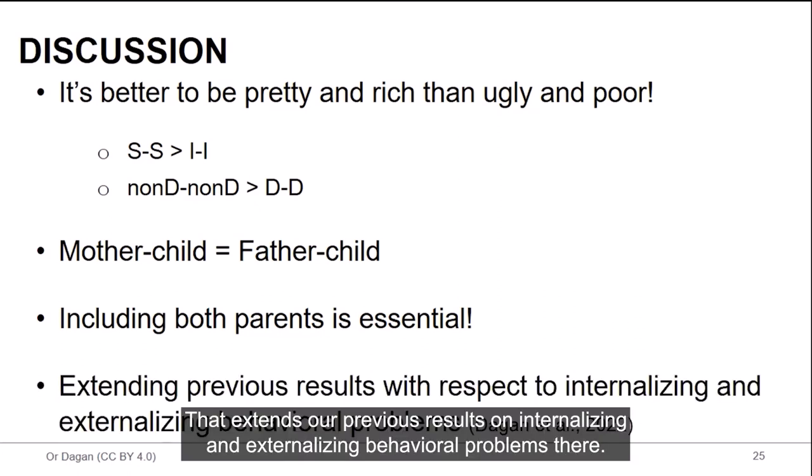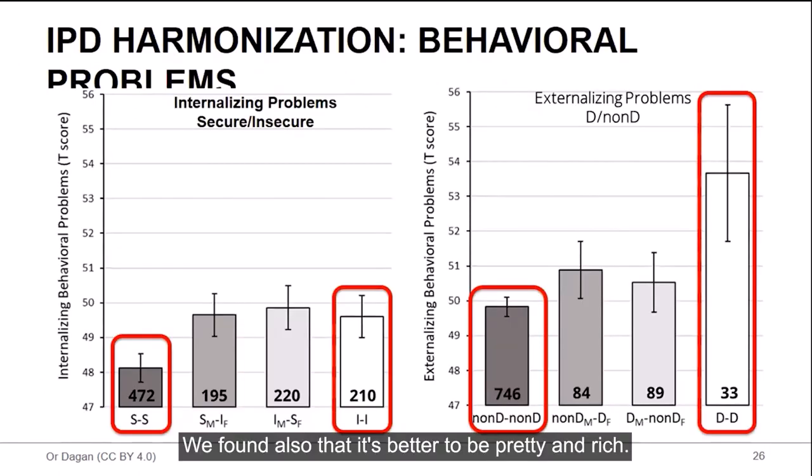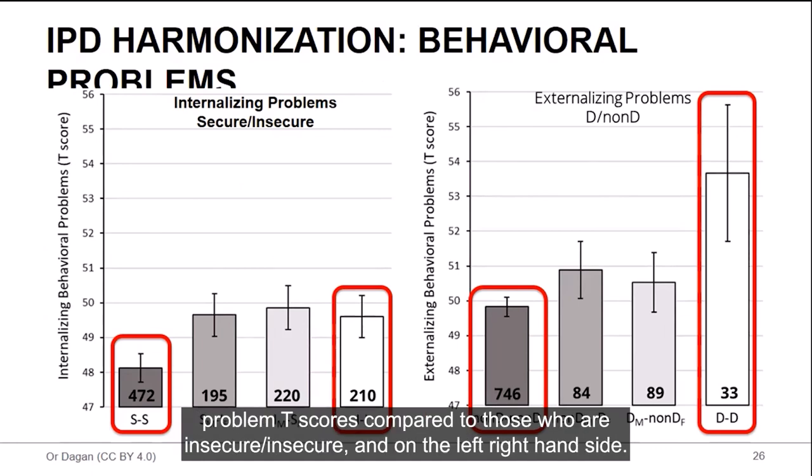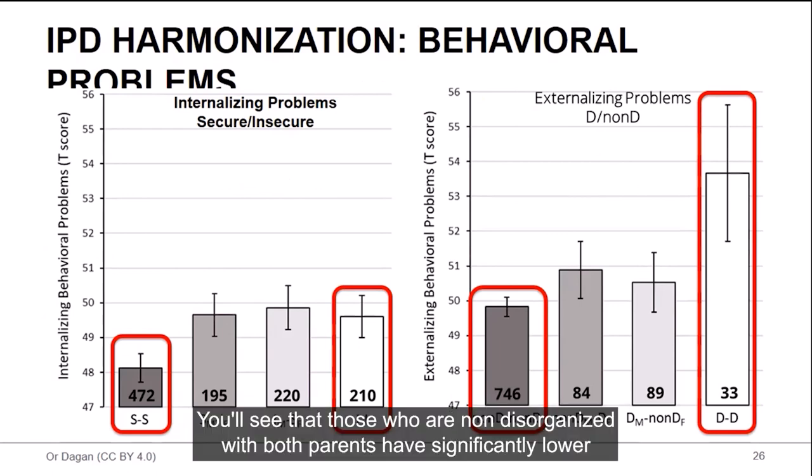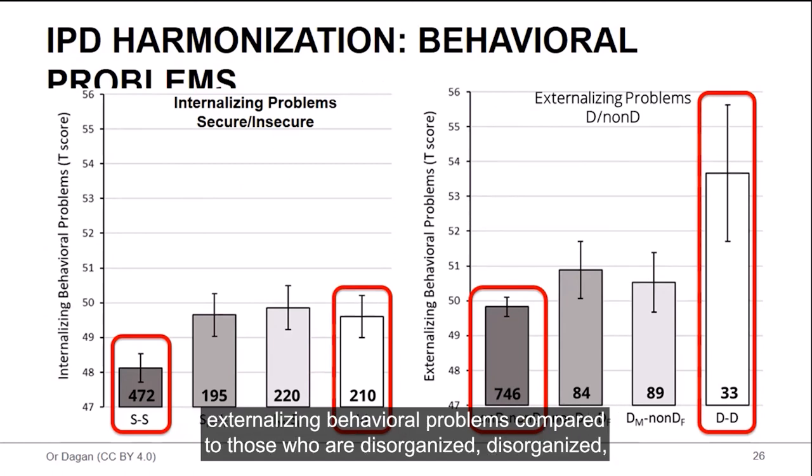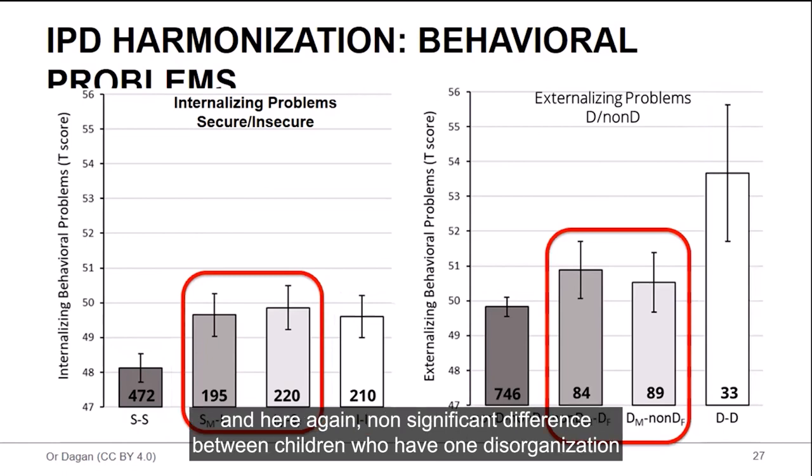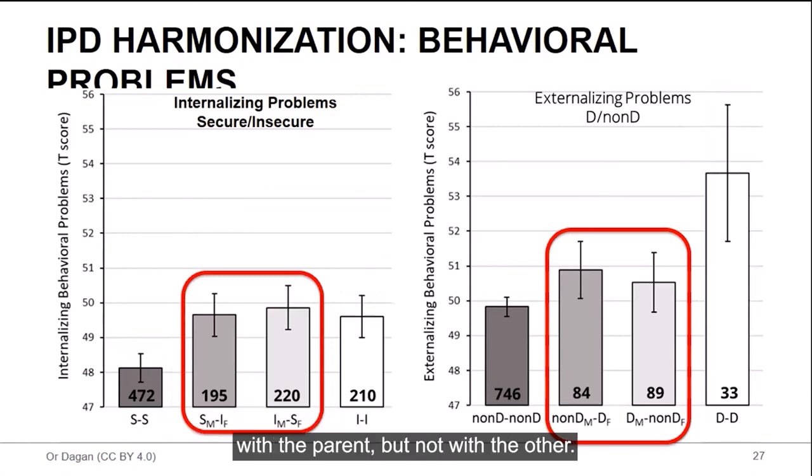And that extends our previous results on internalizing and externalizing behavioral problems. There we found also that it's better to be pretty and rich. If you are securely attached to both parents, you most probably, you most likely have lower internalizing behavioral problem T-scores compared to those who are insecure-insecure. And on the right-hand side, you will see that those who are non-disorganized with both parents have significantly lower externalizing behavioral problems compared to those who are disorganized-disorganized. And here again, non-significant difference between children who have one disorganization with one parent but not with the other. And the same with secure versus insecure.